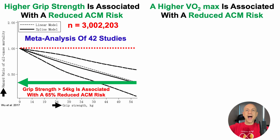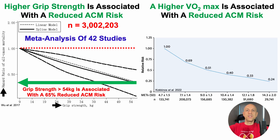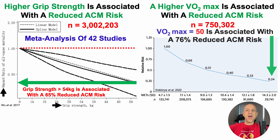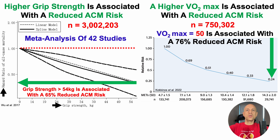Similarly, a higher VO2 max is associated with a reduced all-cause mortality risk. In this study, which included about 750,000 people — also relatively large — we saw that having a VO2 max of 50 was associated with a 76% reduced risk of death for all causes, when compared with the lowest VO2 max group that had a VO2 max of 16.